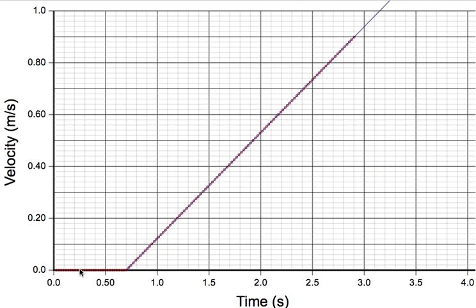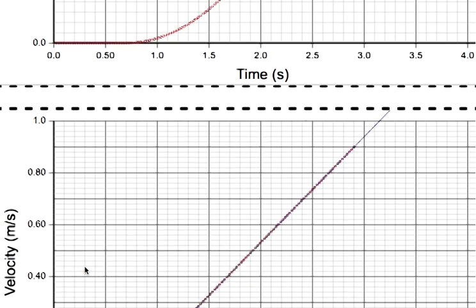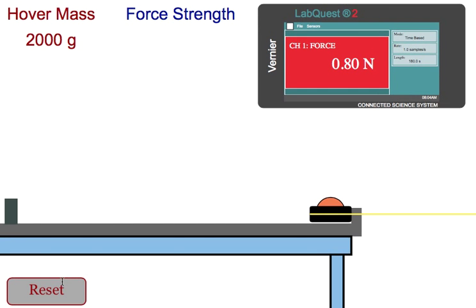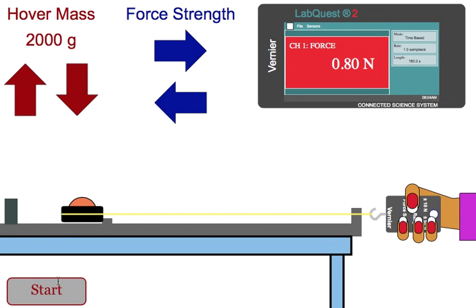We notice that our object moves more slowly. When we find our slope, we find out that the acceleration is half of what it was before. So a greater mass will create a lesser acceleration.